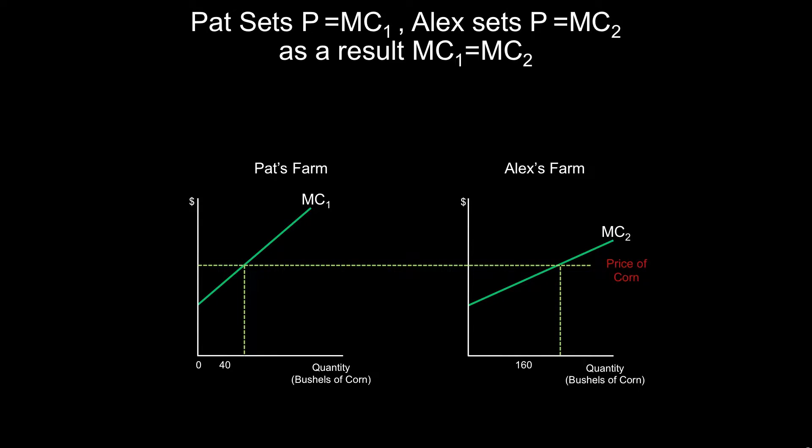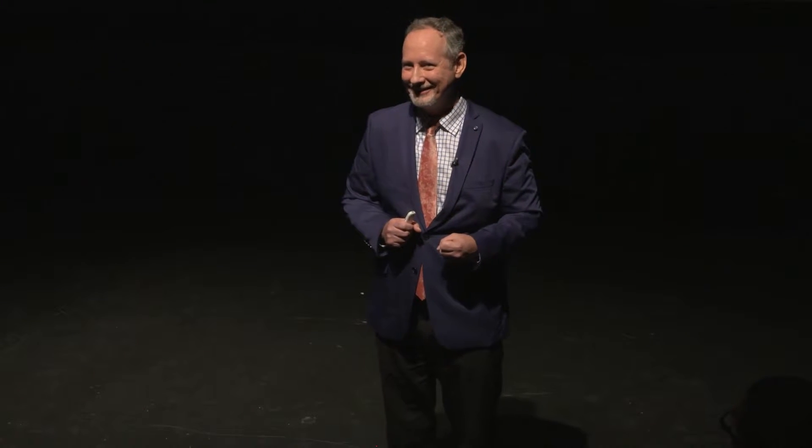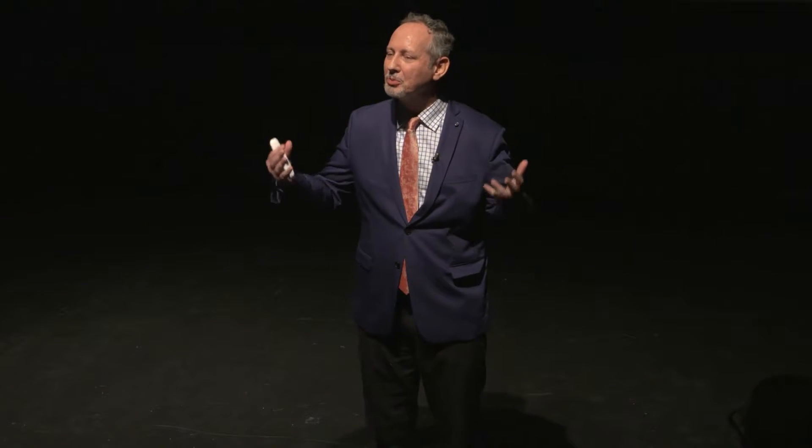Notice, moreover, that neither Pat nor Alex intends this result. Nobody might even understand this result. Before economists discovered that this is a property of markets, no one even knew that this was happening. It's called the invisible hand because it's hard to see — only economists can see the invisible hand. Economists saw that competitive markets allocate production across the firms in an industry to minimize total industry costs. This is a product of human action, but not of human design.